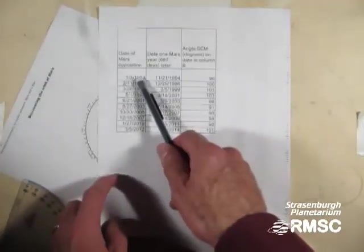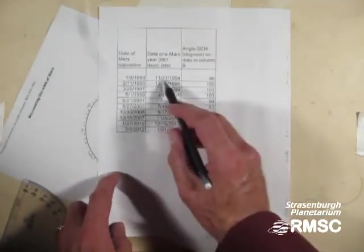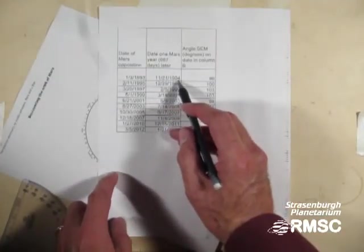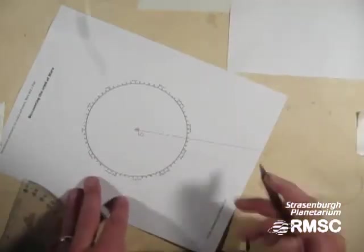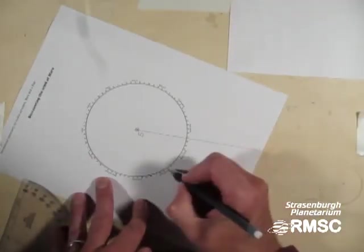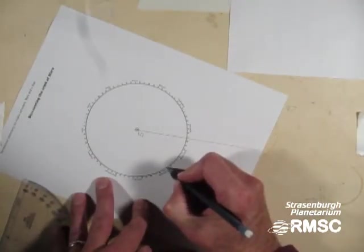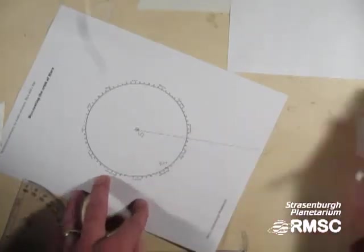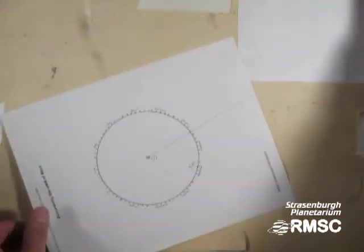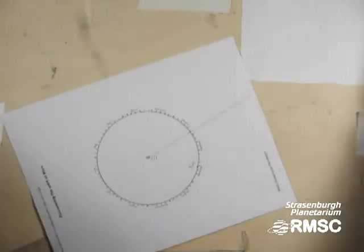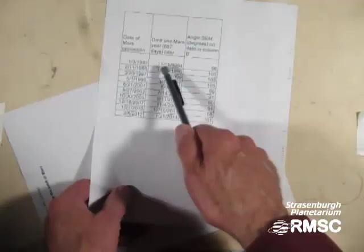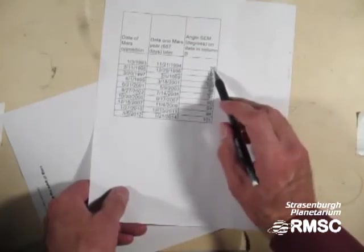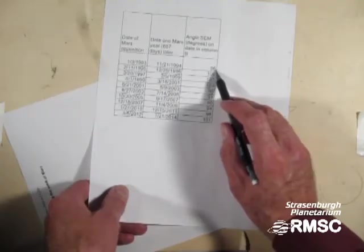One Mars year after that opposition takes us to November 21st, 1994. Let's see, where is the Earth on November 21st? Looks like it's right about there. So mark that E94. And our data from Tycho says that on that date, November 21st, 1994, angle SEM was 96 degrees. That was measured in the sky.